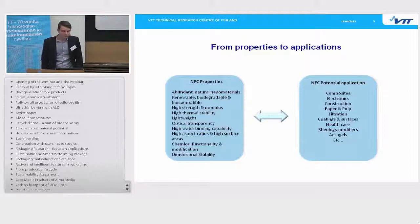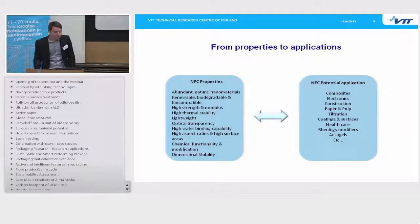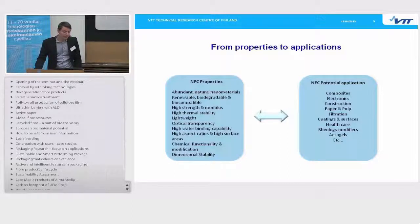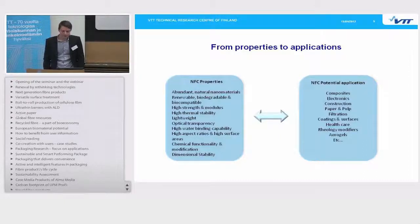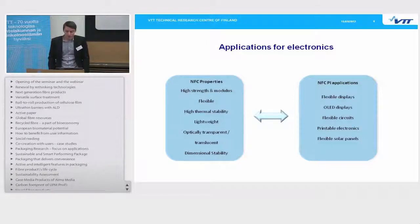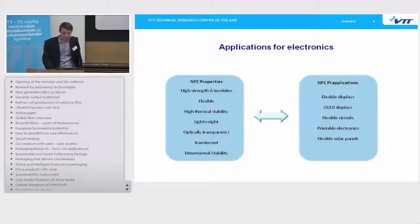Nanocellulose has quite many properties that can be utilized in various applications. The most important are its high strength and high modulus. It is lightweight, and unlike paper products, it can be optically transparent due to its tightly bound structure. It also has a very stable structure in terms of moisture, so it doesn't absorb a lot of moisture. These properties can be used in composites as a strengthening agent, in pulp and paper production, in the paint industry as a rheology modifier, and as we are talking about NFC film, one very promising application is printed electronics.